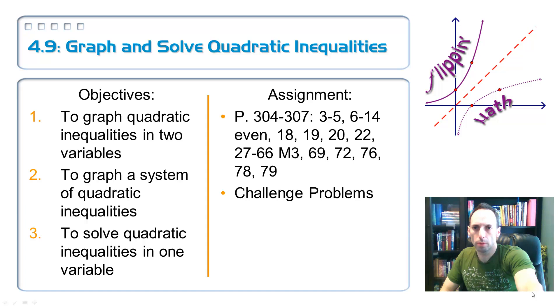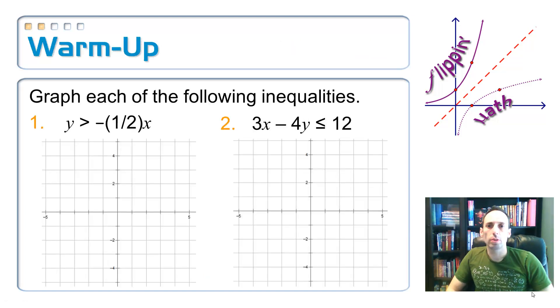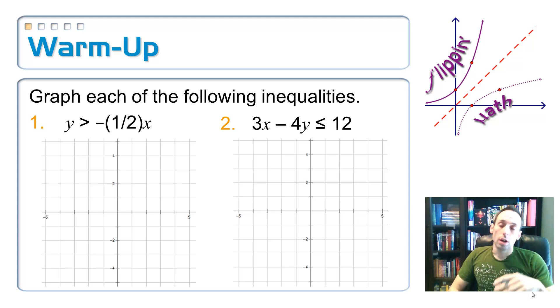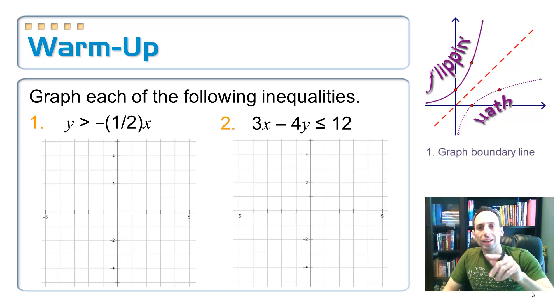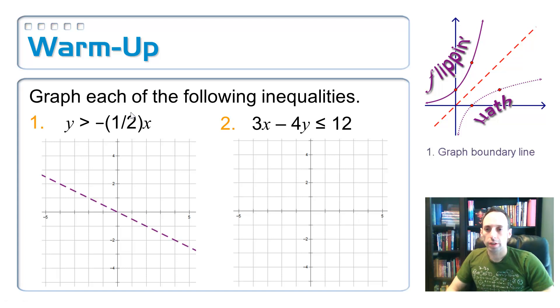Let's start with this little warm-up right here. Very, very simple. Just refreshing our memory on how to solve, or how to graph, just a linear inequality in two variables. So, the first one, y is greater than negative one-half x. Step one is always to graph the boundary line. So, notice, of course, that this is just greater than, so it's going to get a dashed line and not a solid line. And this one's going to go through the origin, and it has a slope of negative one-half. So, I'm going to start at the origin, go down one and right two, just like that.